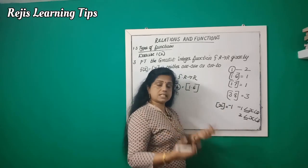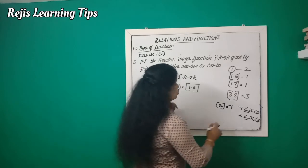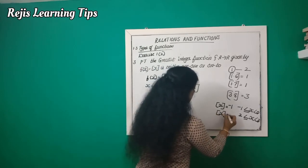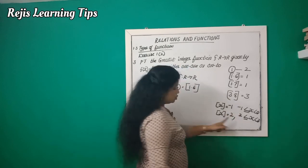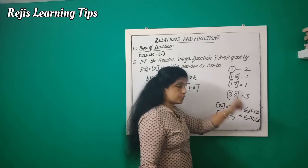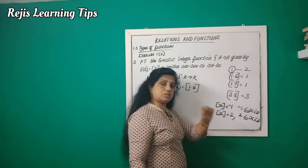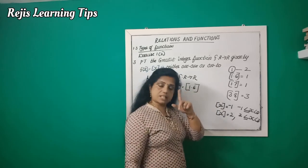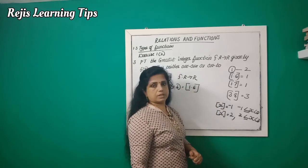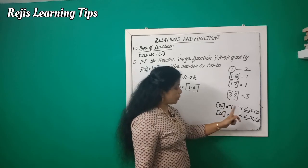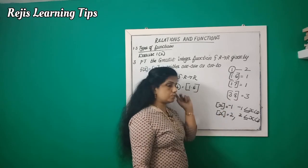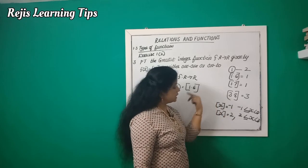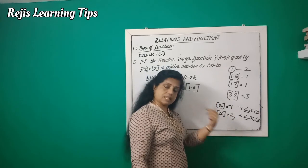For values between 2 and 3, the greatest integer function equals 2. So 2.7, 2.1, 2.9, 2.99 all give greatest integer function equal to 2.